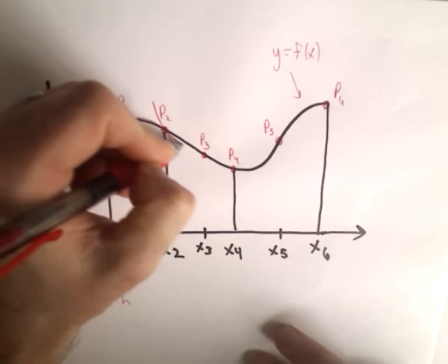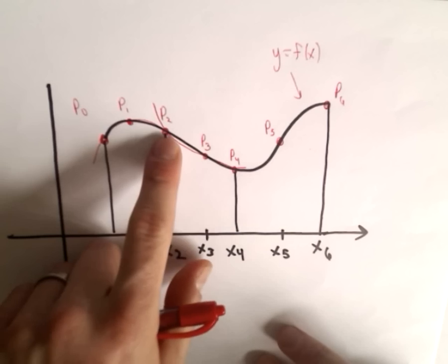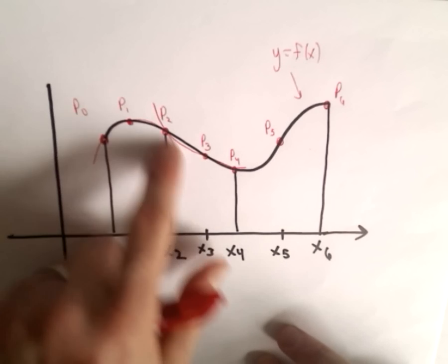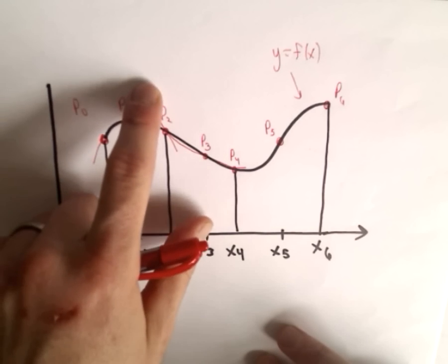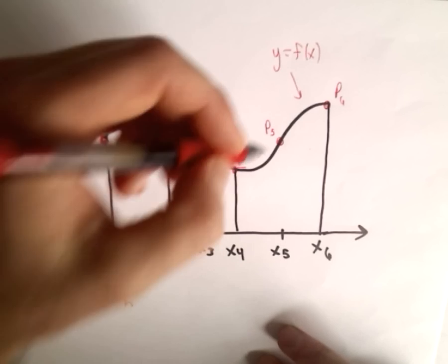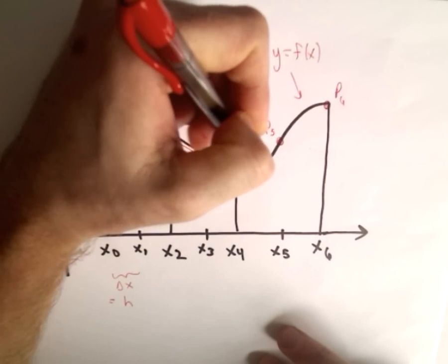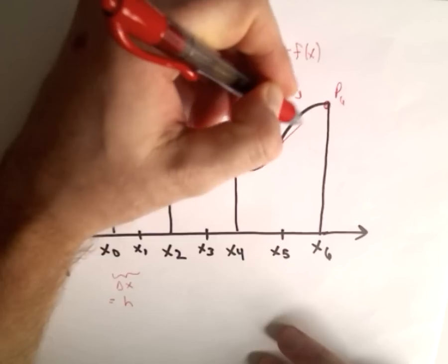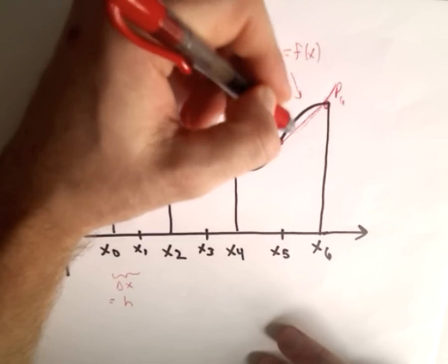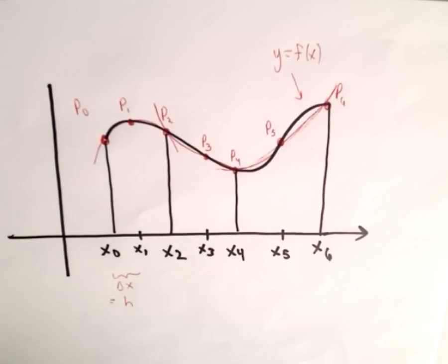The parabola is going to go through those three successive points. The parabolas change — so p₀, p₁, p₂ define one parabola; p₂, p₃, p₄ define a different parabola; p₄, p₅, p₆ define yet another. We have to come up with formulas for those parabolas.